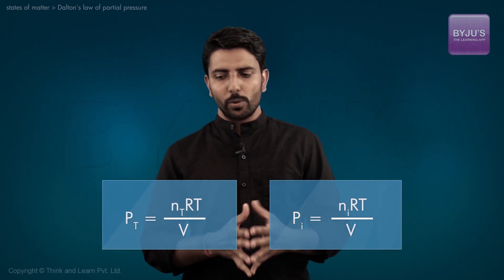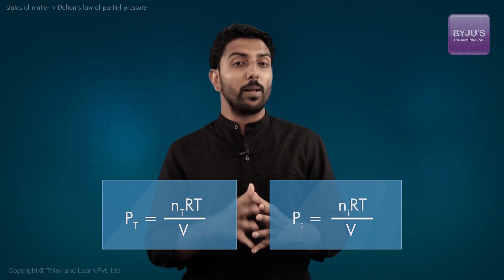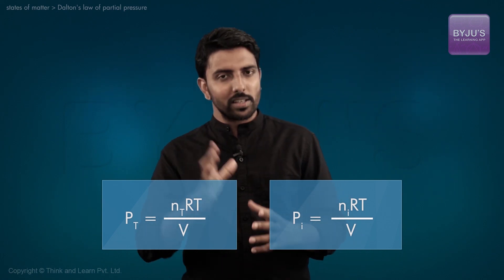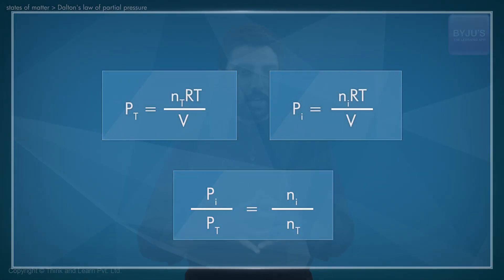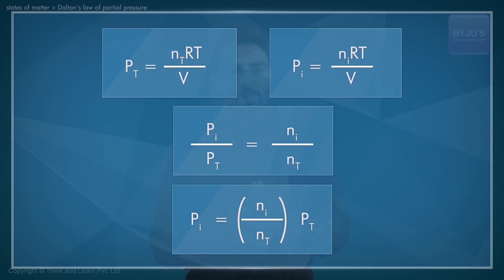Thus, using these two equations, we can establish a relationship between the partial pressure of the component i and the total pressure PT as in: Pi equals Ni by the total number Nt, the whole thing multiplied by the total pressure PT.